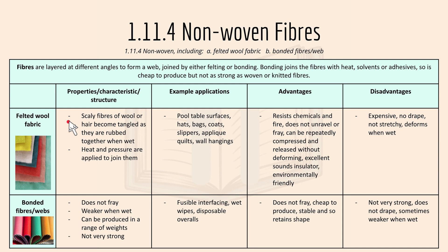Heat and pressure are applied to join the felted fibers. Examples include pool table surfaces, hats, bags, clothes, and slippers. Advantages: resists chemicals and fire, and does not unravel or fray. Disadvantages: it's expensive, not stretchy, and deforms when wet.